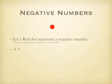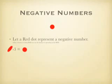Negative Numbers. Let a red dot represent a negative number. When a business is bad, you say that the business is operating in the red. So we use red for negative numbers. So negative 3 is negative 1 plus negative 1 plus negative 1 — I have 3 negatives.